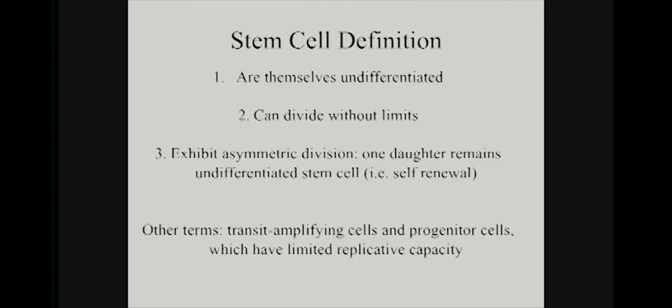So what is a stem cell? This is the basic definition: it's a non-differentiated cell that can divide without a fundamental limit, except as imposed externally. It has no intrinsic limit and it also has the capability of undergoing an asymmetric division — in other words, regenerating itself, regenerating another stem cell, which is fundamental, and also generating a daughter cell that's going to head down a differentiation pathway.